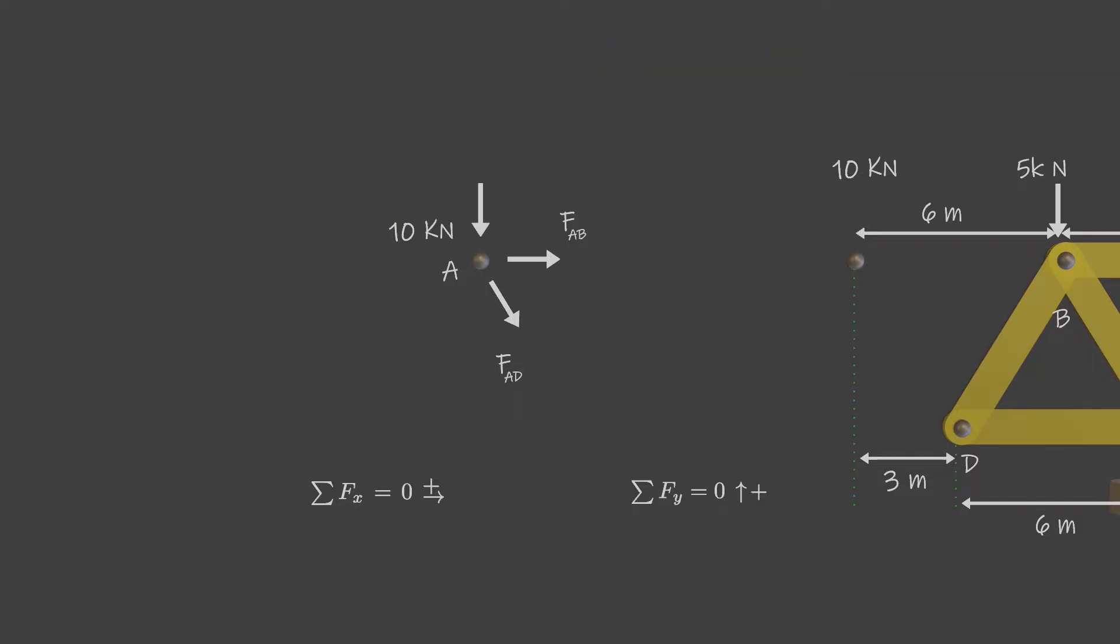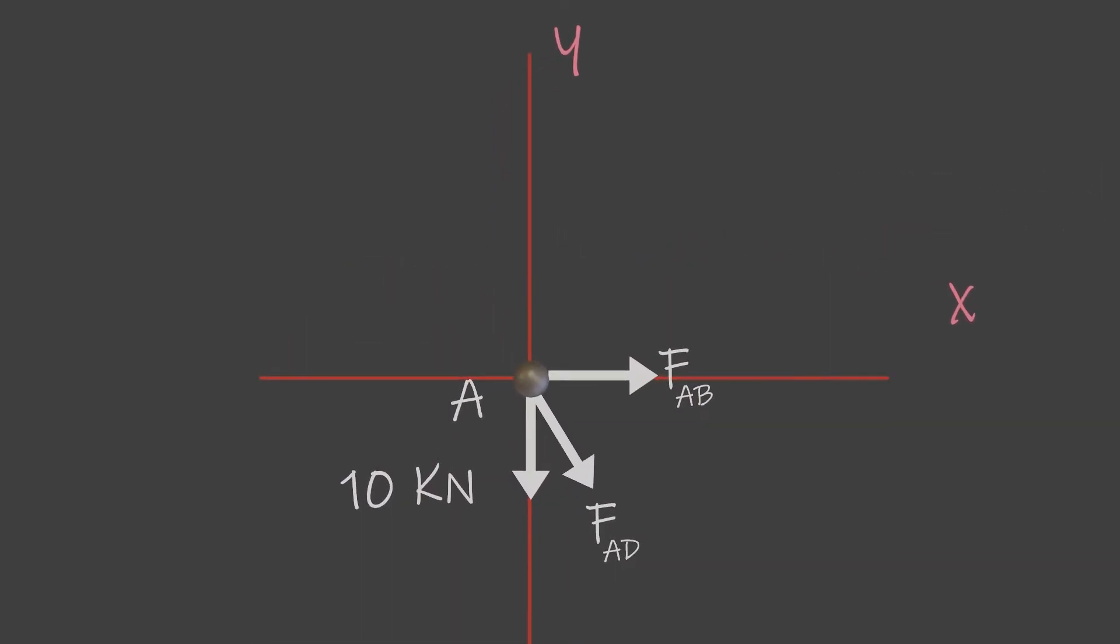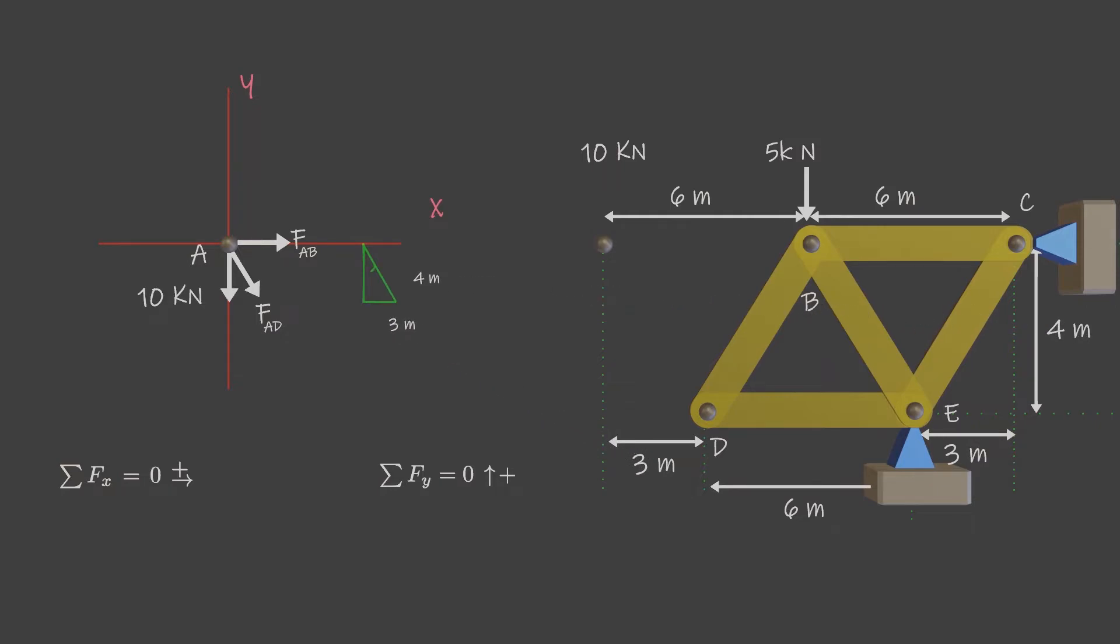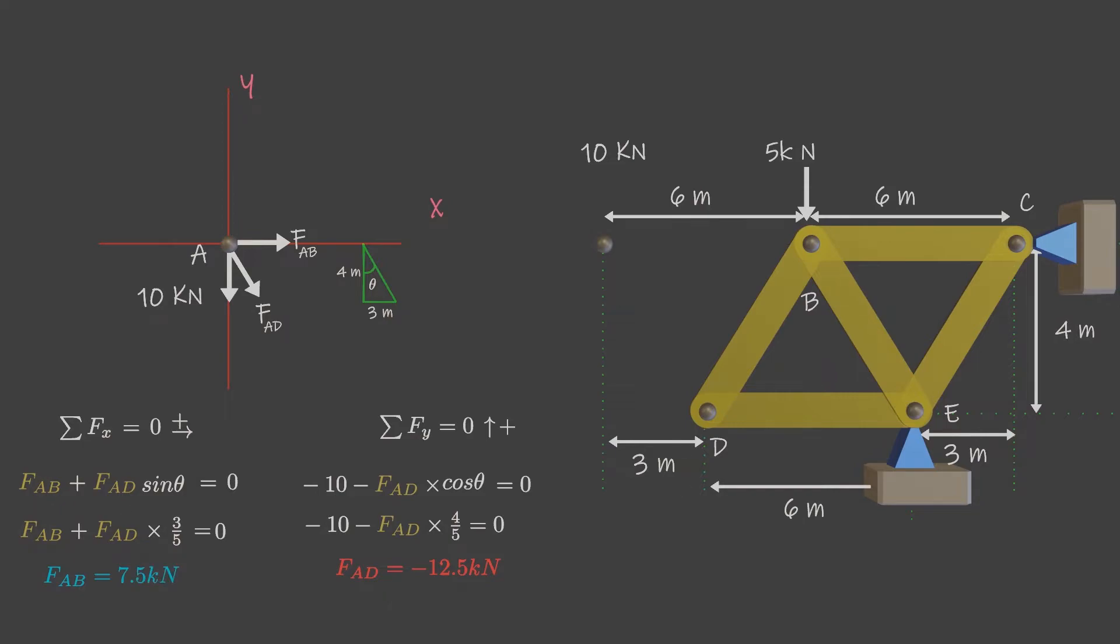After drawing free body diagram of pin A, imagine this pin as origin of Cartesian coordinate system. The force vectors act on this coordinate plane. Arrange these forces according to their direction and identify the angle it makes with x and y axis. Resolve them into their x and y components, and then apply the two force equilibrium equations. Solve for the two unknown member forces and verify their correct sense.